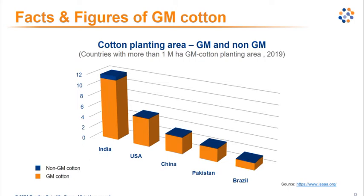Worldwide, the percentage of GM cotton cultivation compared to the global planting area is around 76%.